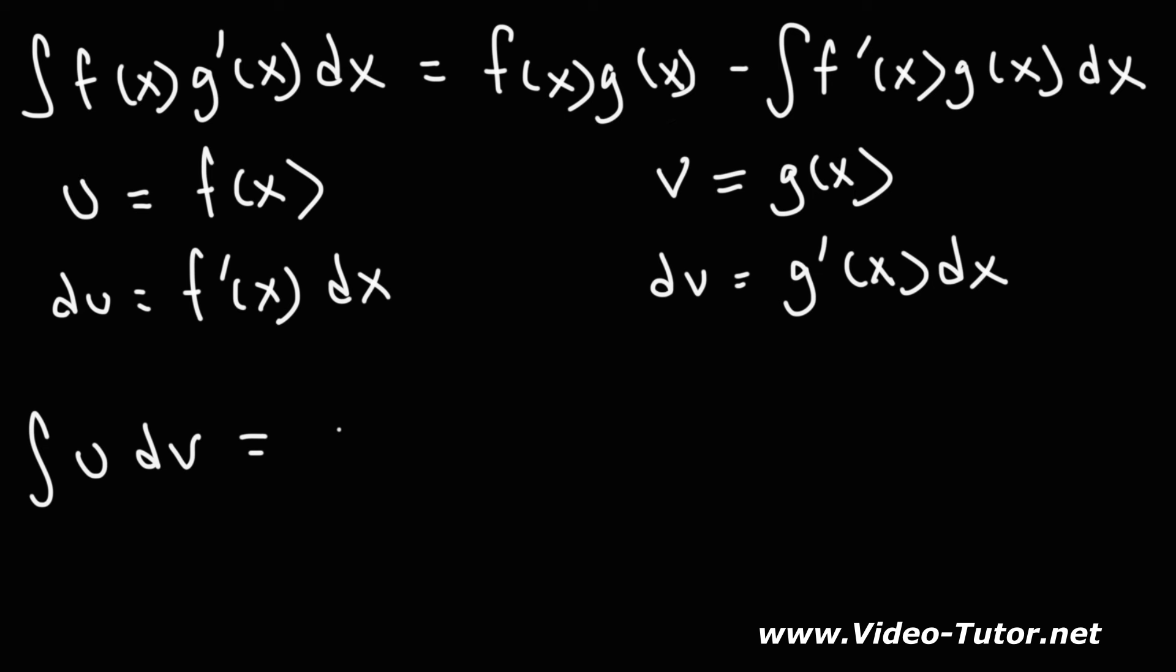So that becomes uv minus the integral of... g of x is simply v, and f prime of x dx, which we can see here, is du. So we have a v and we have a du. And this is the integration by parts formula.